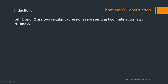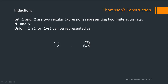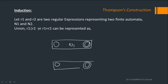Let R1 and R2 be two regular expressions representing two finite automata N1 and N2. For the union operation — R1 union R2, also written as R1 plus R2 — N1 will have its own start state and its own final state, and similarly N2 will have its own start state and final state. Union means either going through one path or the other. Just imagine two parallel roads: some common point comes, and from there you branch either towards one road or the other.